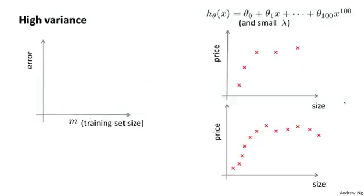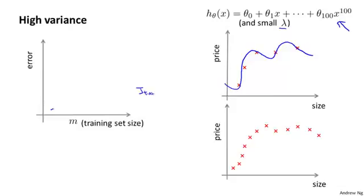Next, let's look at the setting of a learning algorithm that may have high variance. If you have a very small training set, like five training examples, and you're fitting a very high order polynomial — say a hundredth degree polynomial — with a fairly small value of lambda, you'll end up fitting this data very well with a function that overfits. So if the training set size is small, J_train will be small. As the training set size increases, it becomes slightly harder to fit the data set perfectly, so J_train increases, but the training set error will still be pretty low.